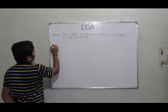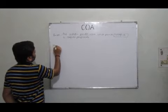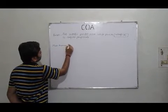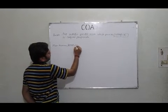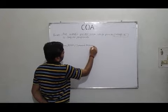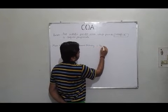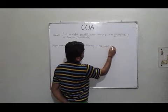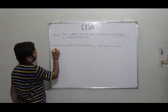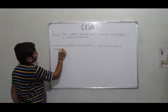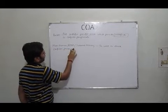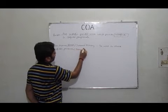The next component is main memory. We call it sometimes RAM, we call it sometimes internal memory. It is used to store computer programs. And when we say program, we basically mean data and instructions.